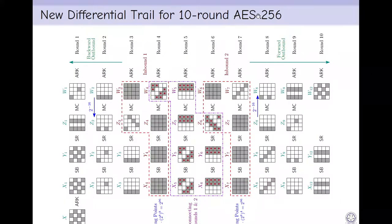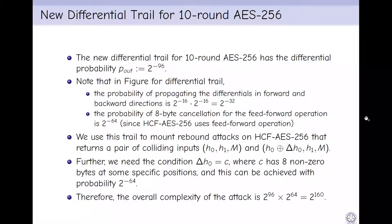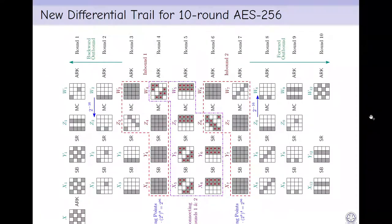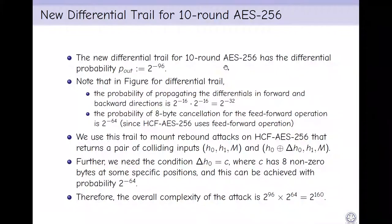Here is the 10-round differential trail for AES-256. In rounds 3 and 4 we have inbound phase 1. In rounds 6 and 7 we have inbound phase 2. In round 5 we connect these two inbound phases. From Δz6 and 7 we move to round 10 with probability 2^(-16). From Δz3 we move to round 1 with probability 2^(-16). We also have the probability of 8-byte cancellation in x and w, which is 2^(-64). So overall probability of the differential trail is 2^(-96).